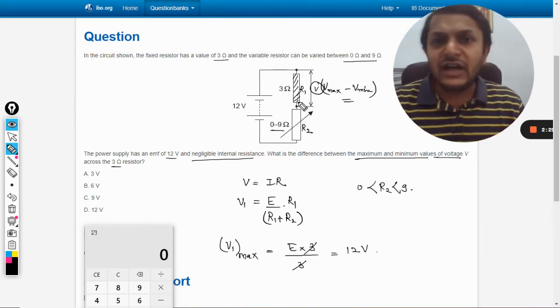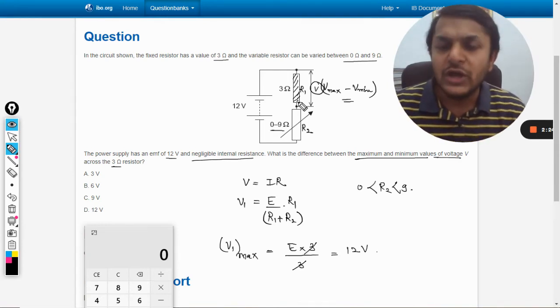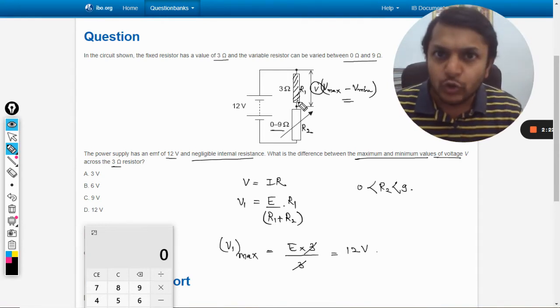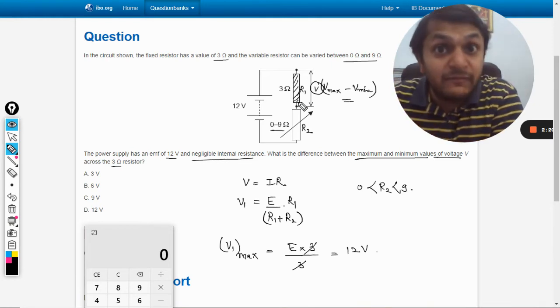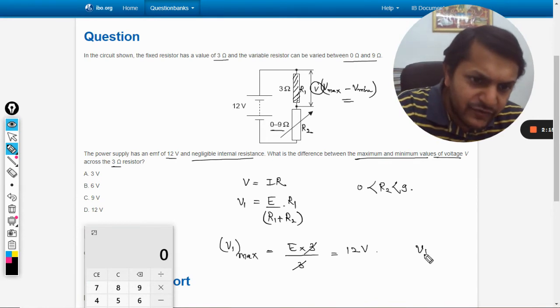So our maximum value is coming out to be 12. Now if I ask you about the minimum value, it means I need to find the maximum value of R2, the maximum value of V2, so that would be corresponding to the minimum value of V1.